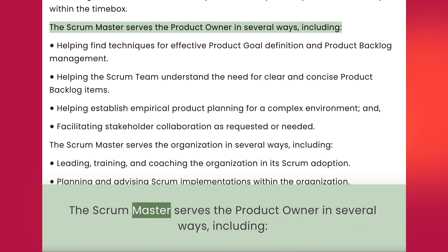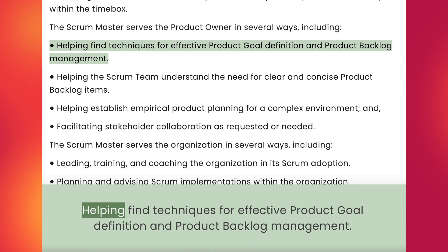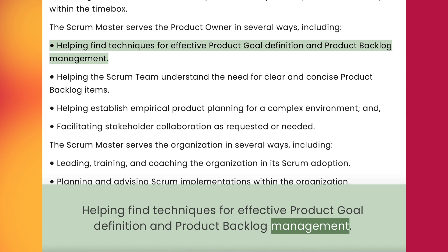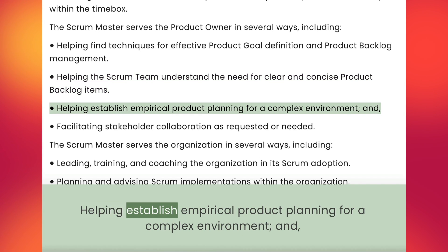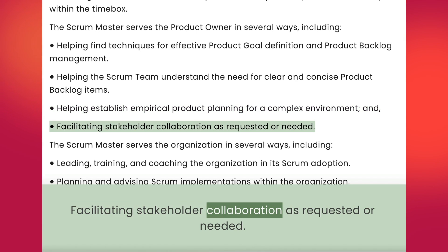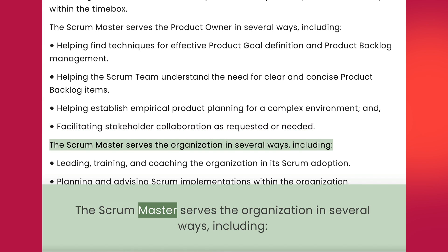The Scrum master serves the product owner in several ways, including: helping find techniques for effective product goal definition and product backlog management; helping the Scrum team understand the need for clear and concise product backlog items; helping establish empirical product planning for a complex environment; and facilitating stakeholder collaboration as requested or needed.